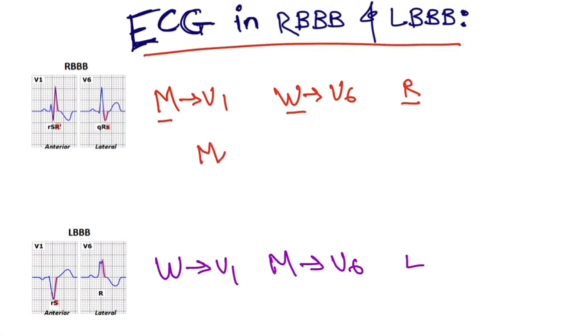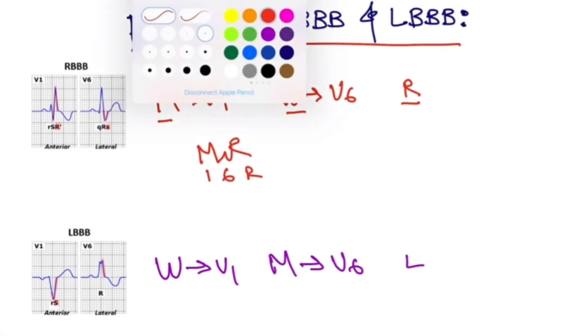is M-W-R and just label it as 1, 6, and right bundle branch block. Similarly for left bundle